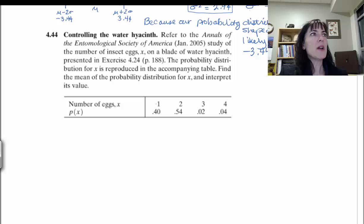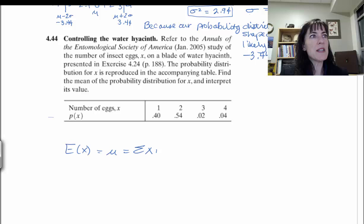Find the mean of the probability distribution and interpret its value. So we're looking at x and we have the probability of x. To find the mean, remember that's the expected value of x, which is also the mean, we have to take the sum of the x's times the p of x's.